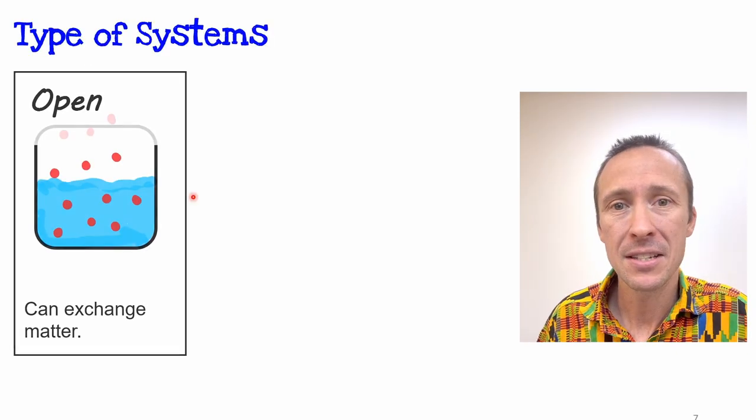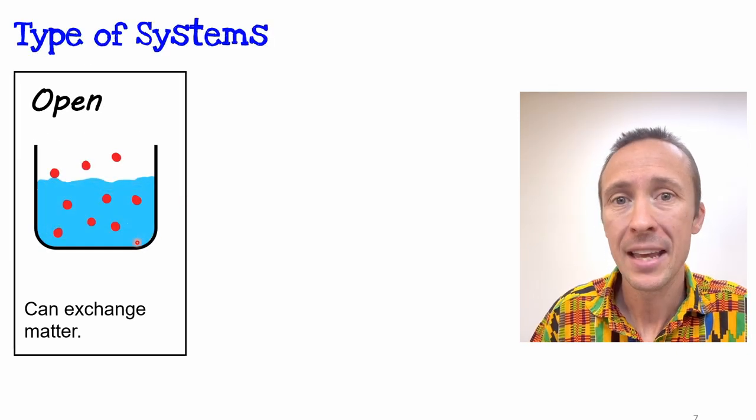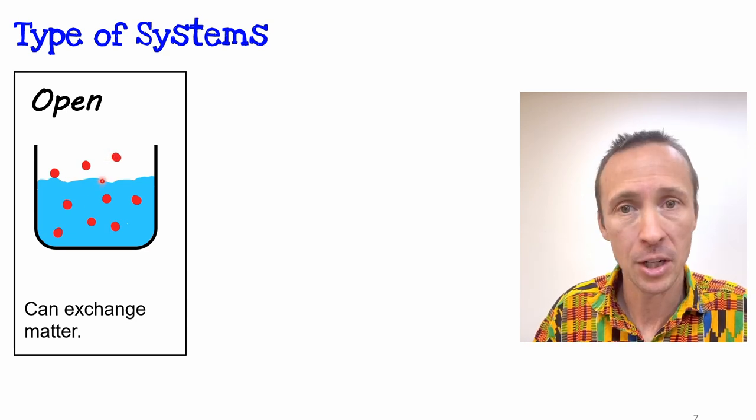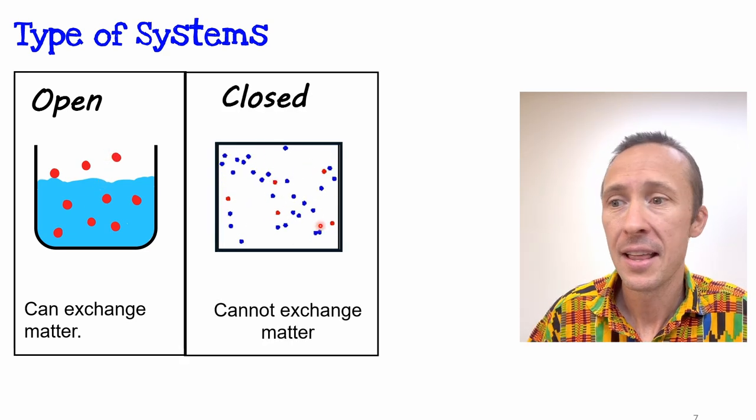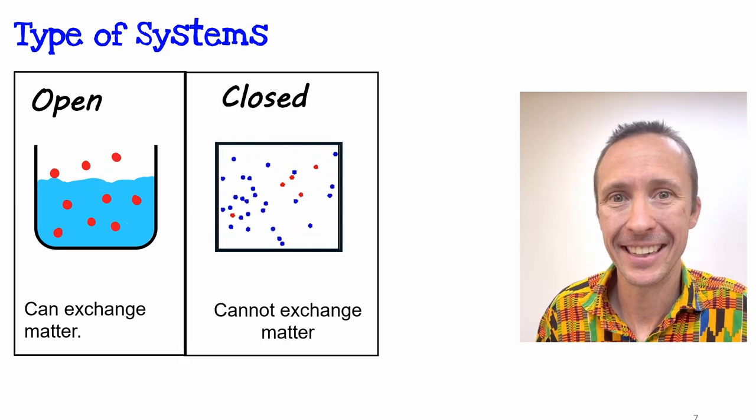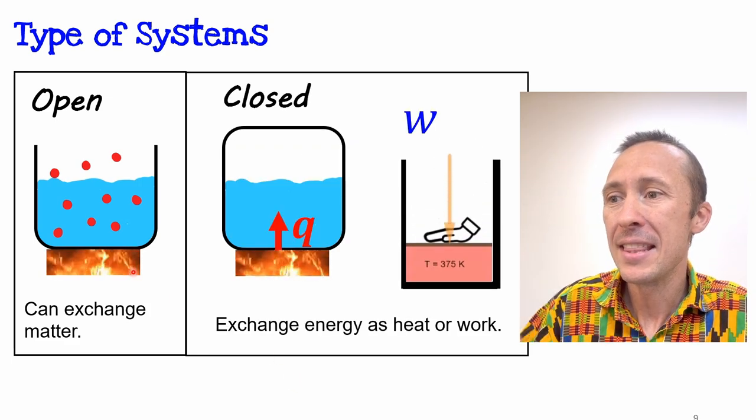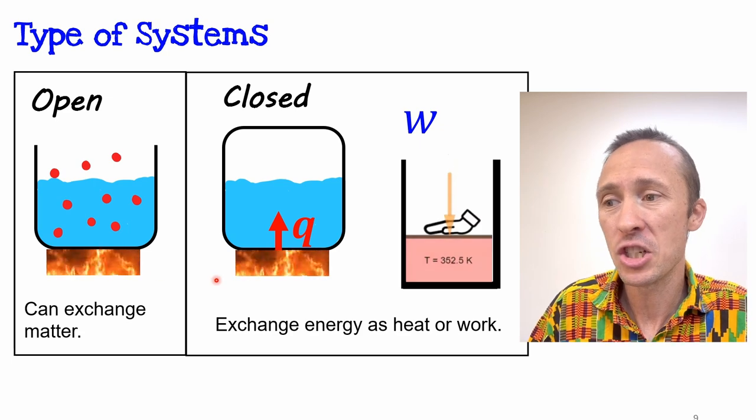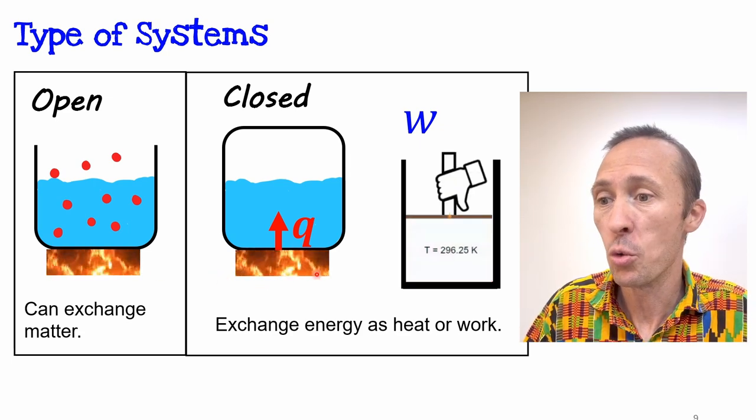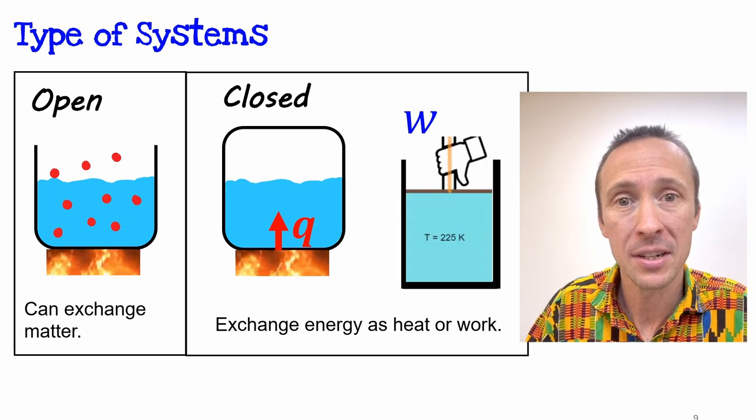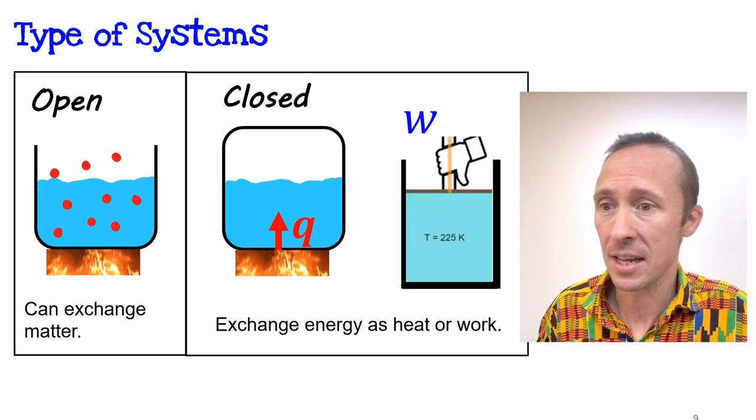If the system is open, it can exchange matter with the surroundings. Mass can come and go. If it's closed, then it can't. But regardless of if it's open or closed, the system may exchange energy as heat or energy as work with the surroundings. It's going to depend on the boundary in the process.